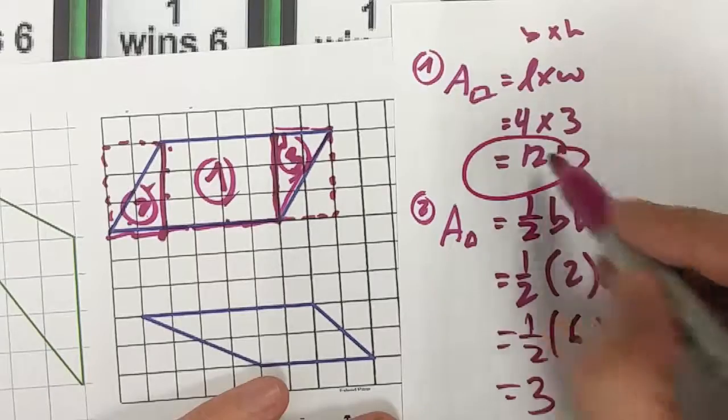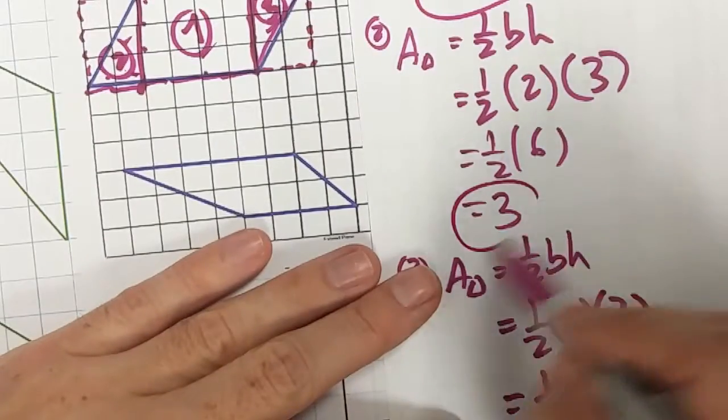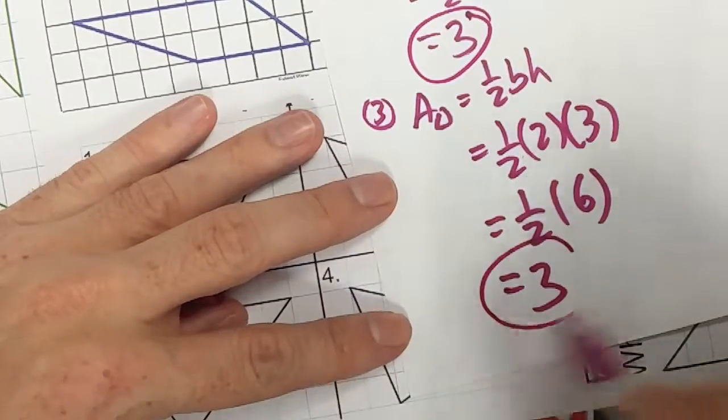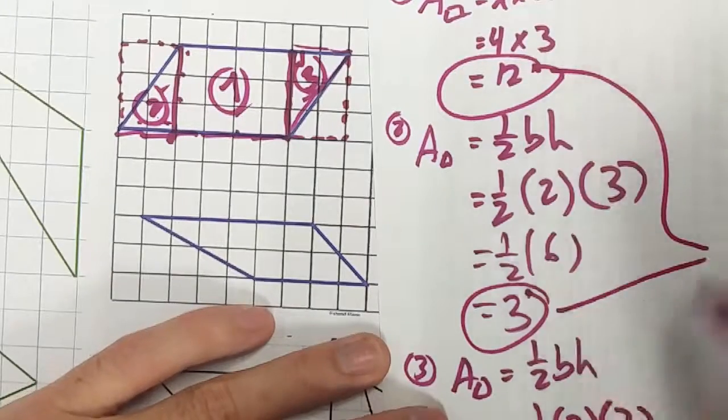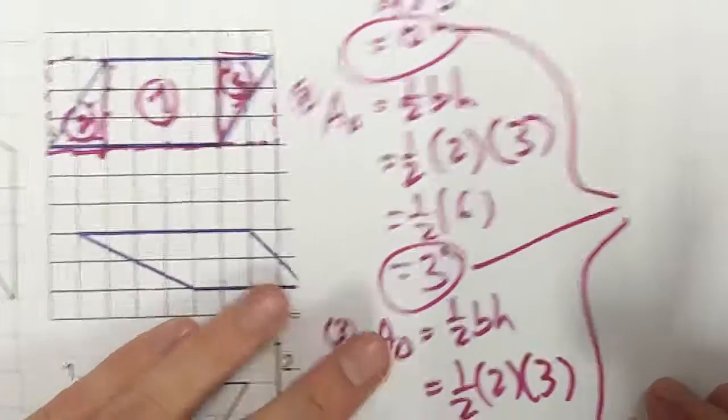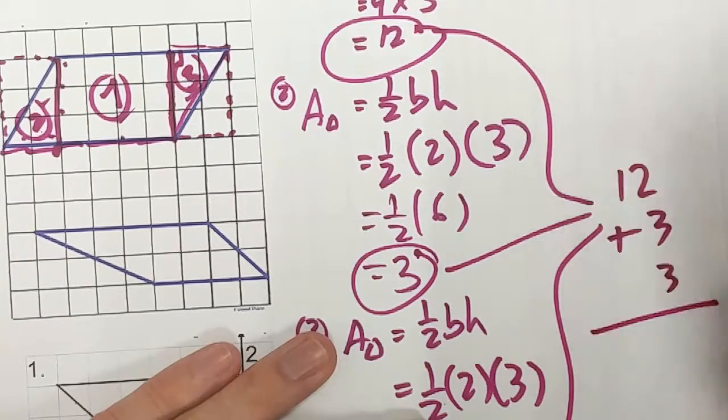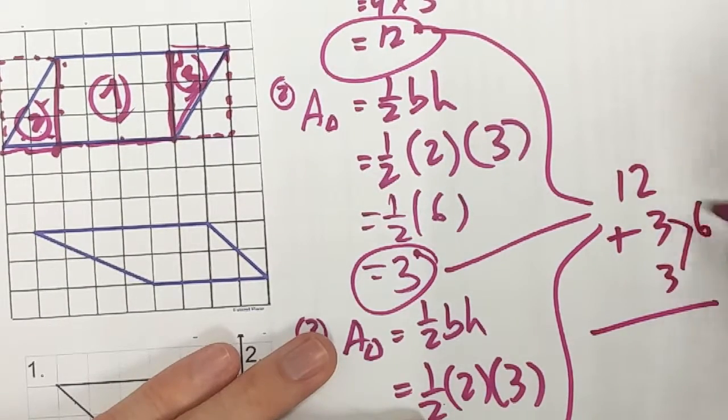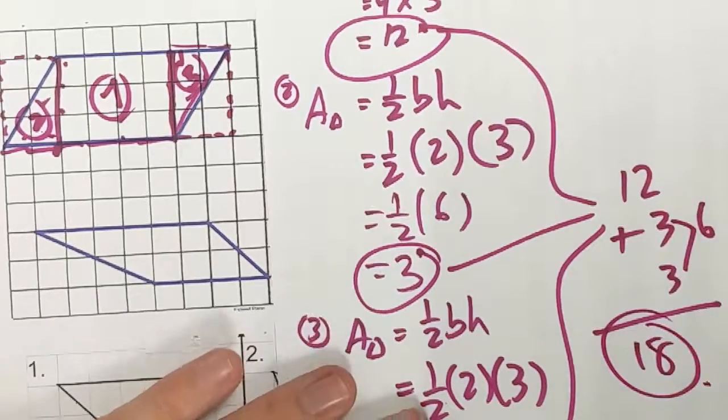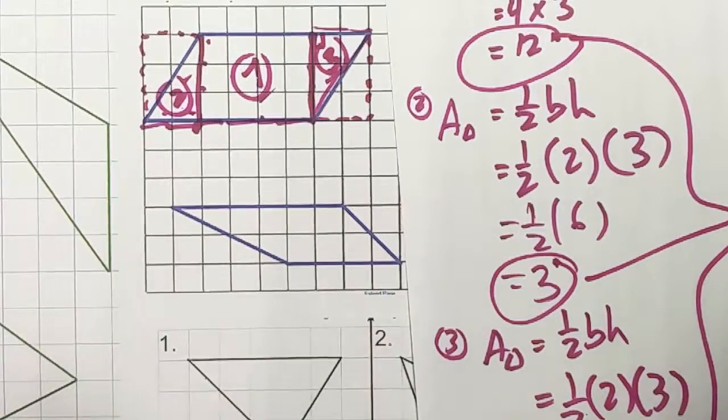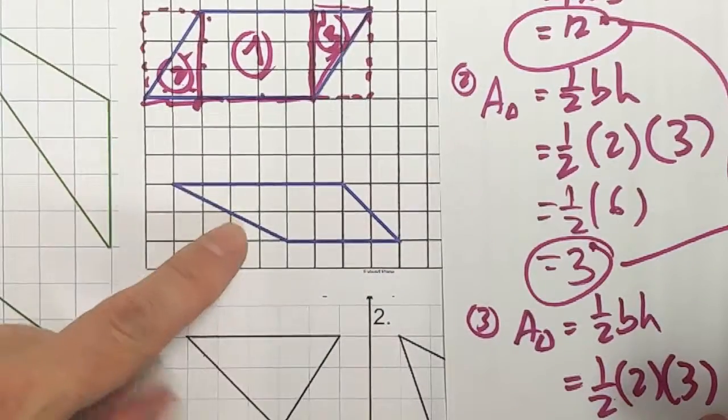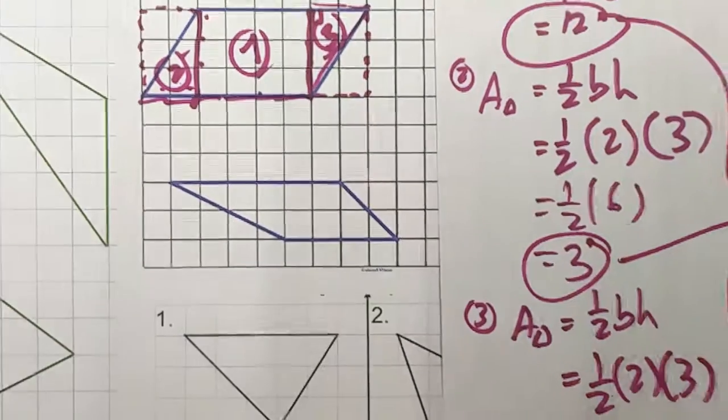So you see here that my area of my first shape is 12, my second shape is 3, and my third shape is 3. So all together my total area for this shape, this parallelogram, is going to be 12 plus 3 plus 3, a total of 18. Next one we're gonna look at this shape down here and look at a different method.